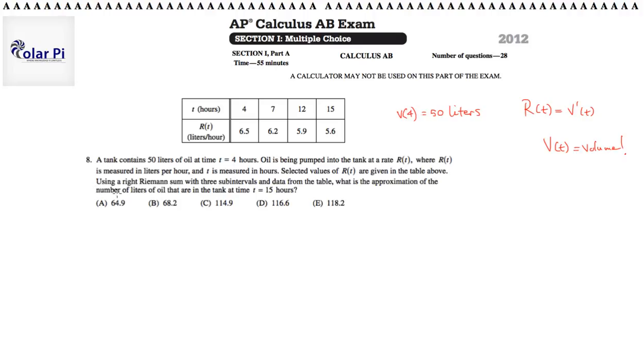And, it says, using a right Riemann sum with three sub-intervals and the data from the table above, what is the approximation of the number of liters of oil that are in the tank at time t equals 15? So, that is to say, find v of t at time t equals 15.